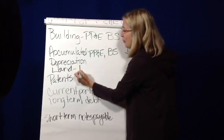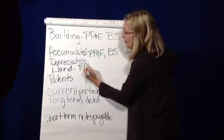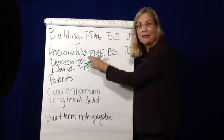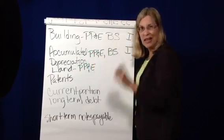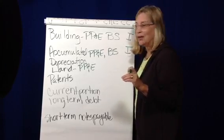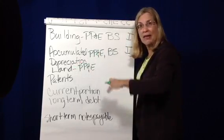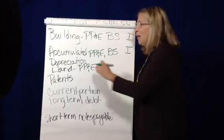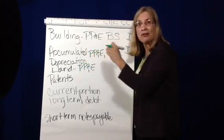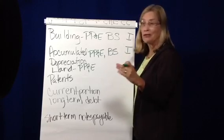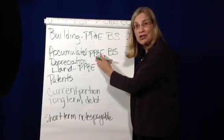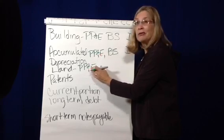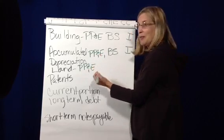Land is also property, plant, and equipment. And I wanted to make the point that land is never depreciated, because land is forever. So when we buy land, the cost of the land shows up on our balance sheet at its cost, but we do not depreciate it over time, because land is forever. The things that we depreciate are buildings, machinery, and equipment, but never land. So I just wanted to make sure I made that point.